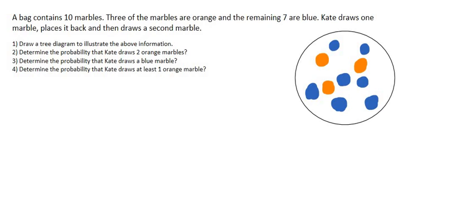The first question says draw a tree diagram to illustrate the above information. A lot of people panic with tree diagrams, but I promise you they're actually probably one of the easiest parts of probability. What you've got to do is imagine yourself as Kate. So we're going to put a little dot over here which will mark the start of our tree diagram.